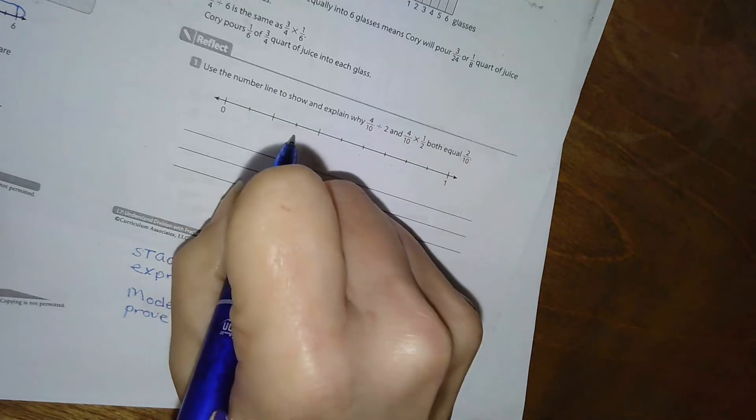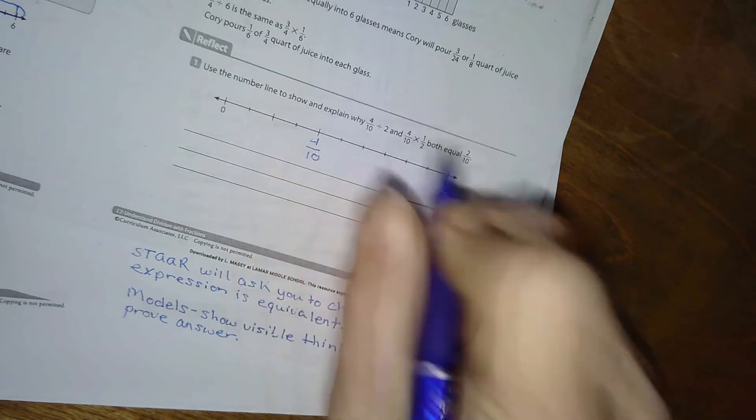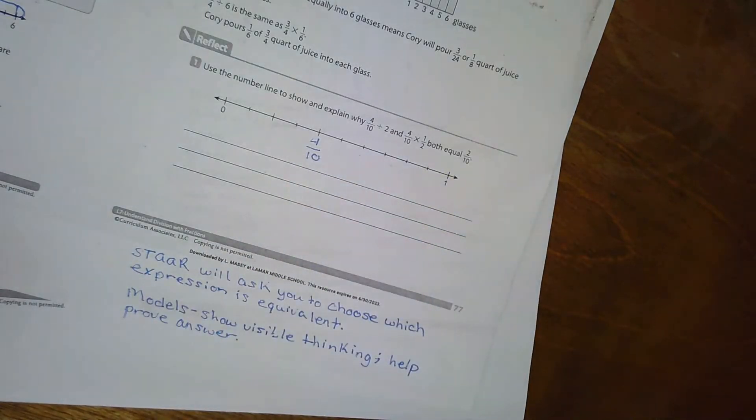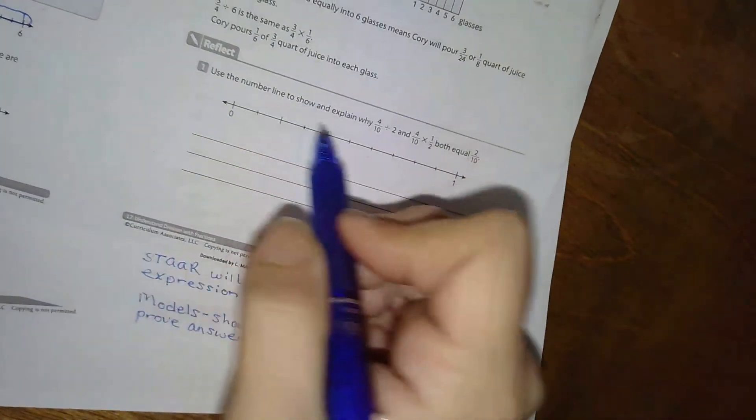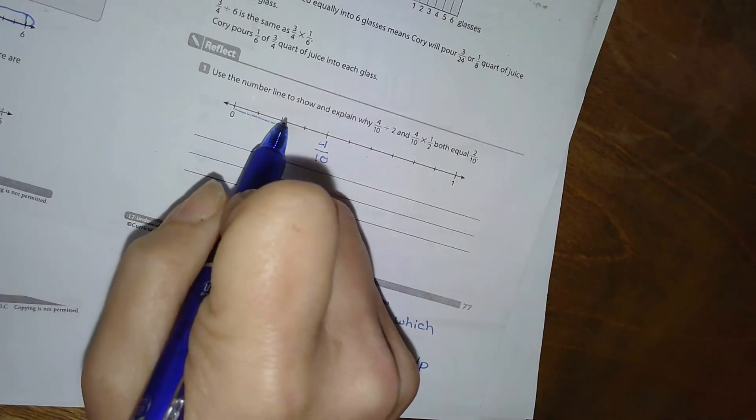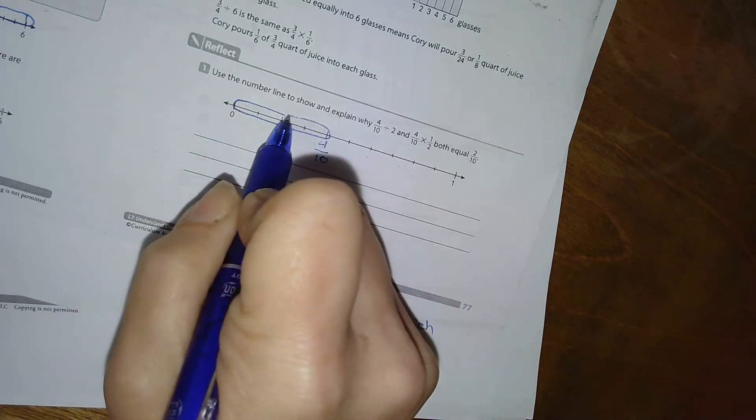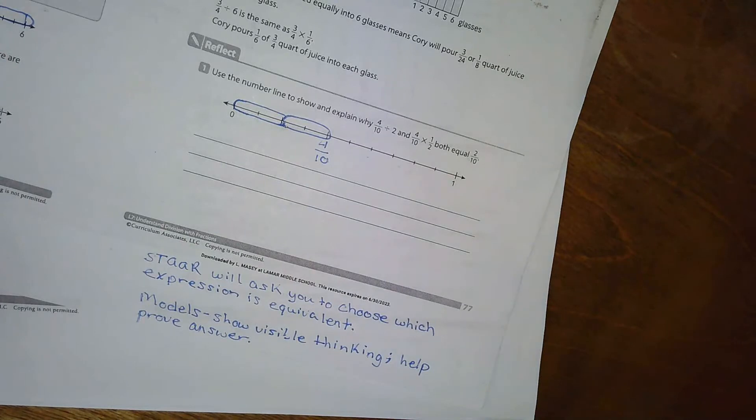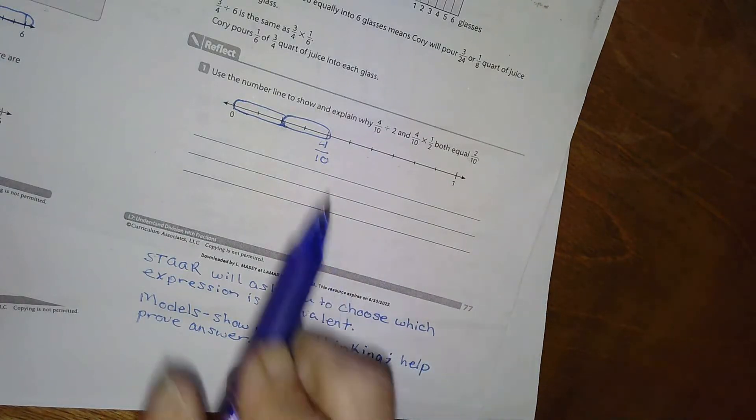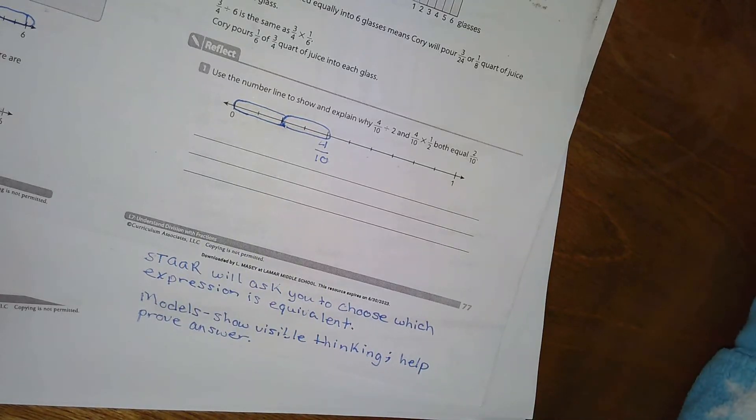And it's asking me about the four-tenths, so that's one-tenth, two-tenths, three-tenths, four-tenths is right here, okay? And I'm going to divide it into two. And there is my two-tenths, okay?